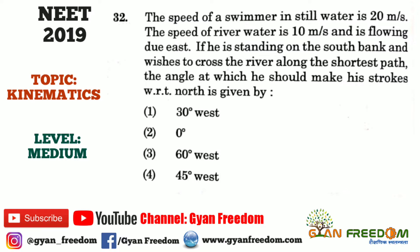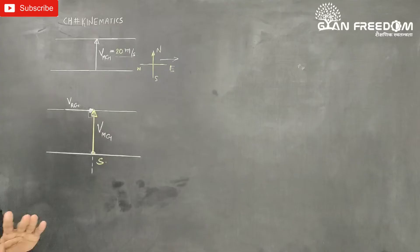The speed of a swimmer in still water is 20 meter per second. The speed of river water is 10 meter per second and is flowing due east. If he is standing on the south bank and wishes to cross the river along the shortest path, the angle at which he should make his strokes with respect to north is given by.